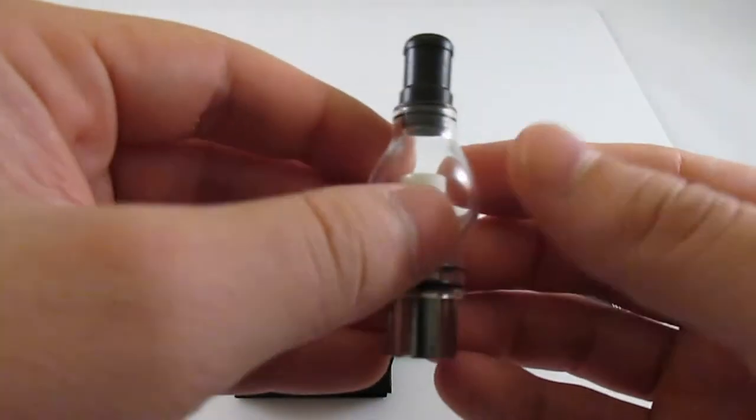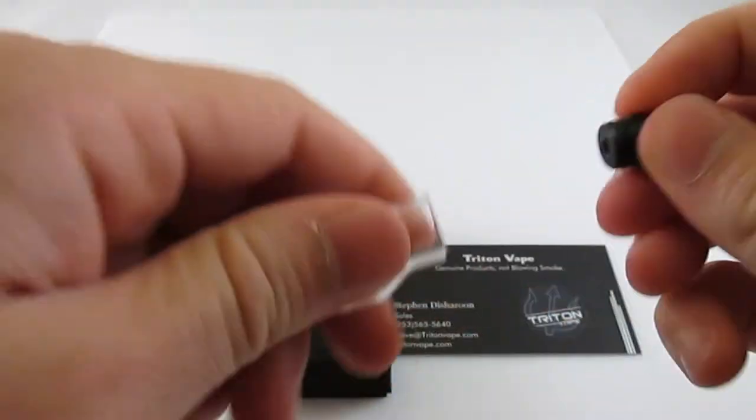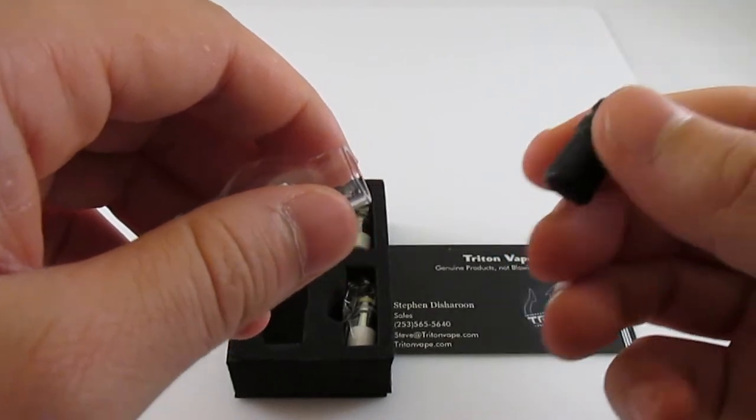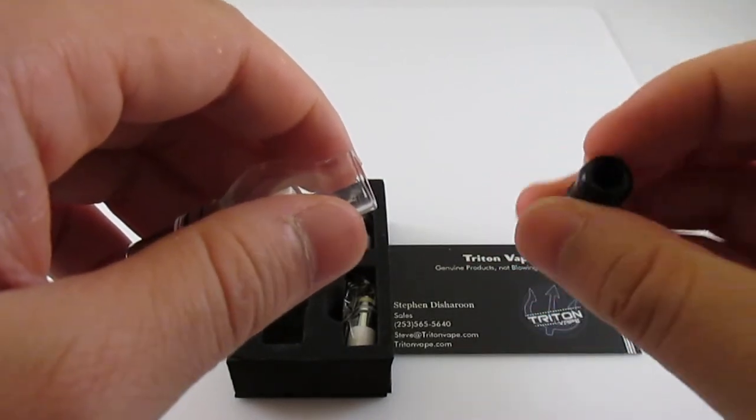This globe comes with four different parts. You have the interchangeable drip tip, so you can change this to whatever you like if you have a fancier one, but this works really well.